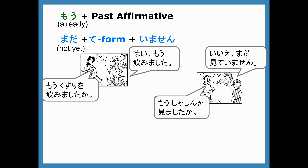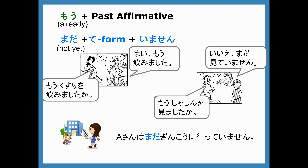For まだ, we want to use the te-form plus imasen, so it has to be imasen at the end. まだ doesn't have a negative meaning on its own — it has to have that negative ending in order to make sense as meaning 'not yet.' For example: E-san wa mada ginkou ni itte imasen — E-san hasn't been to the bank yet. We use te-imasen plus まだ to show what we haven't done yet.